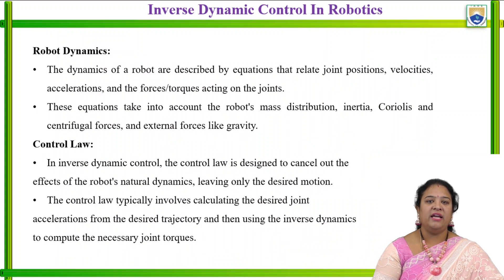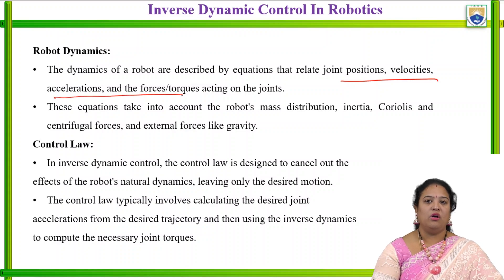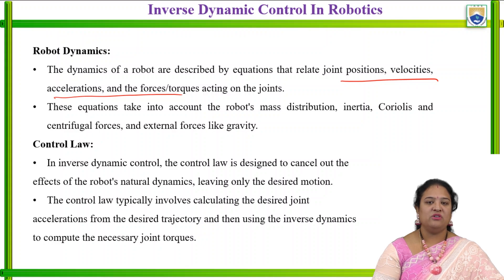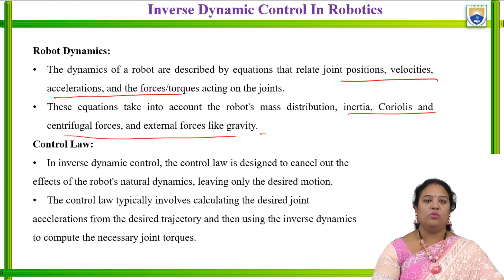Generally, the dynamics of a robot are described by the equation related to the joint position, velocity, acceleration, and force or torque acting on the joints, as we have discussed in the generalized equation. This particular dynamics is used to find out the position, velocity, acceleration, or the force and torque acting at the joints or the manipulator. This equation takes into account the robot mass distribution, inertia, Coriolis and centrifugal forces, and external forces like gravity.